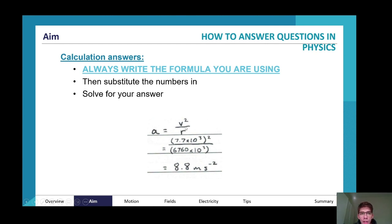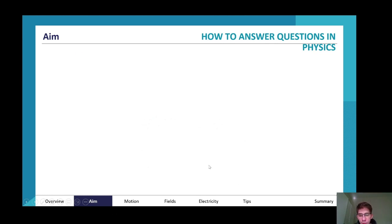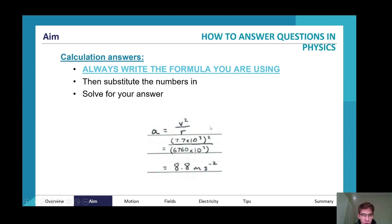This can be a two mark question. One mark for the correct substitution and using the right formula, and the second mark for getting the right answer. Some students might be using the right formula and do the correct substitution, but they might get the incorrect answer because they've done something wrong with the calculator.